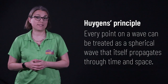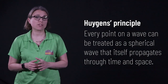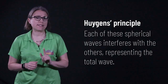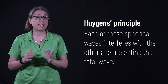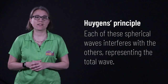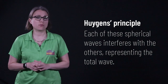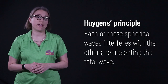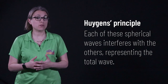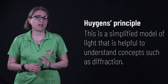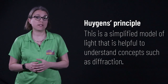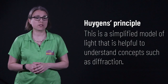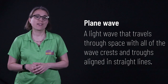Huygens' principle states that every point on a wave can be treated as a spherical wave that itself propagates through time and space. Each of these individual spherical waves interact with each other through interference. Each individual spherical wave amplitude is added to the amplitude of every other individual spherical wave, and that sum total represents the total wave. Note that Huygens' principle is a simplified model that we can use to understand some concepts, but it is not a complete theory of optics or electromagnetism.